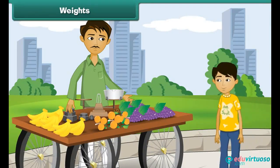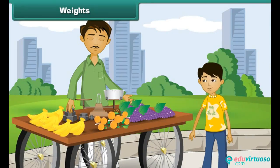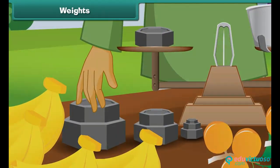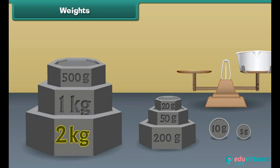When we go to a fruit seller, he uses different types of weights to balance the required amount of objects. Some weights used to measure are 2 kg, 1 kg, 500 grams, 200 grams, 50 grams, 20 grams, 10 grams, and 5 grams.